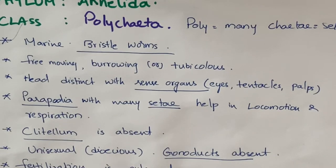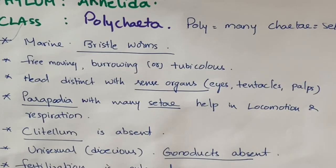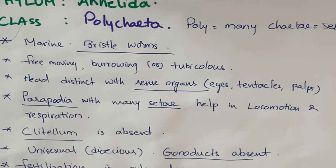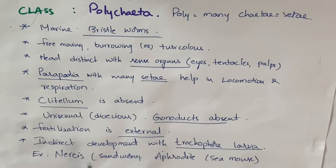Gonoducts are the ducts which carry the germ cells. Here gonoducts are absent, and the gametes are released into the coelom. From the coelom they are liberated outside through the nephridium. Next, fertilization is external — as the germ cells are liberated outside the body, fertilization occurs in marine water.